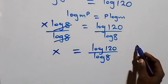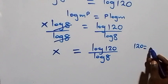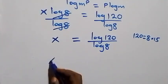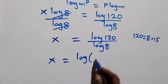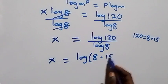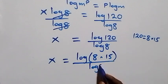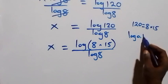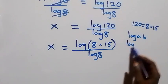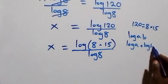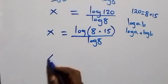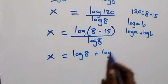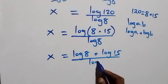We can express 120 as 8 times 15, so x equals log(8 × 15) over log 8. This follows the law of logarithm: log(a × b) equals log a plus log b. So x equals (log 8 + log 15) over log 8.